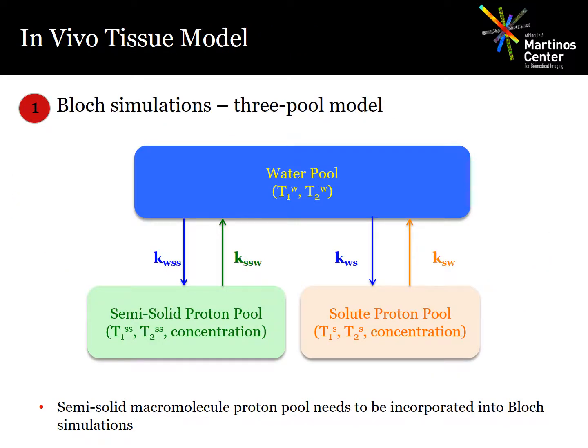For in vivo experiments, the two-pool model used in reconstructing the phantom data is insufficient because the semi-solid pool also has to be accounted for. So instead we switch to a three-pool model that includes exchange between the water, the solute, and the semi-solid pools, and that's what we use to generate the dictionary.